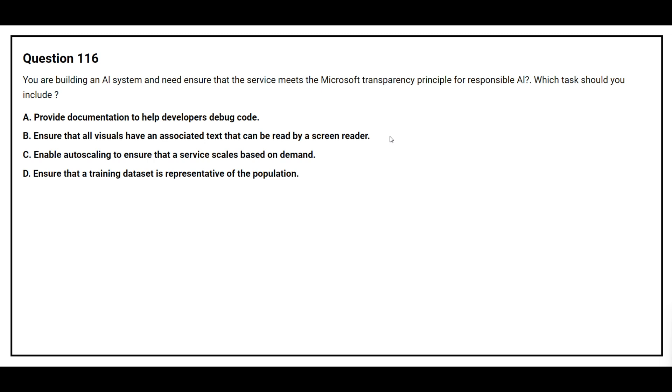Question number 116. You are building an AI system and need to ensure that the service meets the Microsoft transparency principle for responsible AI. Which step should you include? Option A, provide documentation to help developers debug code. Option B, ensure that all visuals have an associated text that can be read by a screen reader. Option C, enable auto scaling to ensure that the service scales based on demand. Option D, ensure that the training data set is representative of the population. The correct answer is option A, provide documentation to help developers debug code.